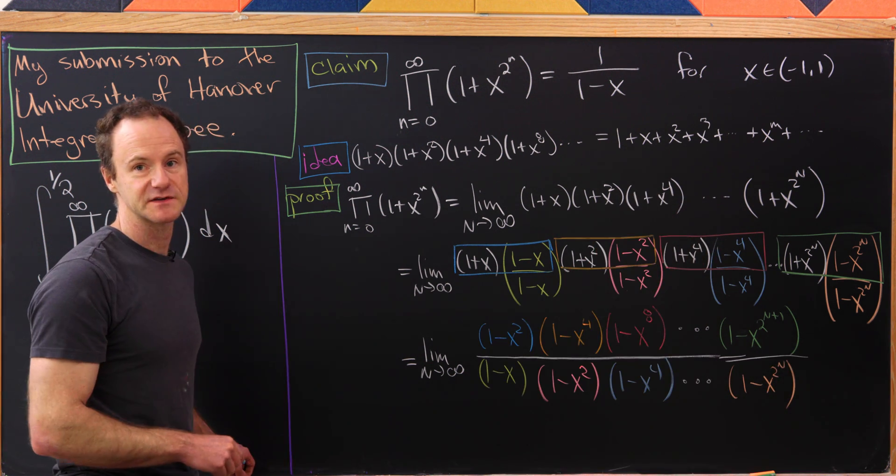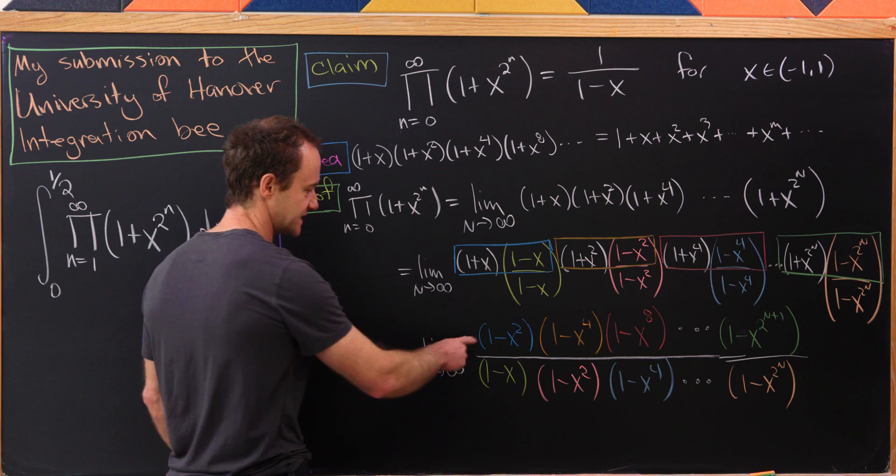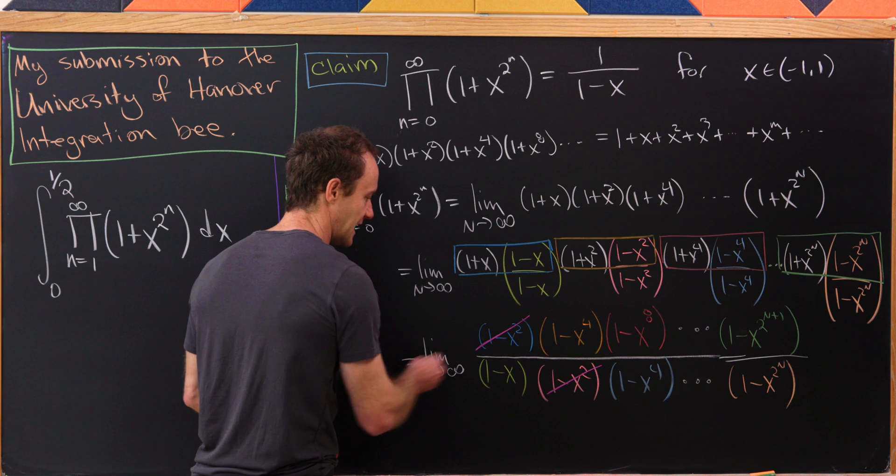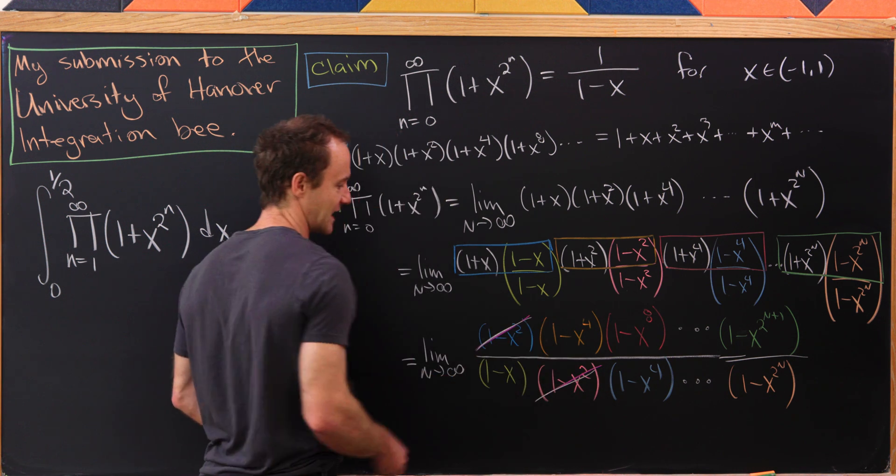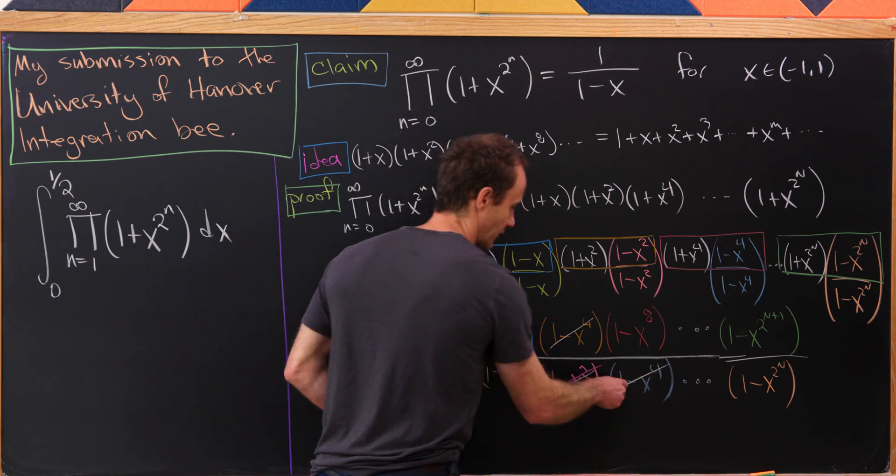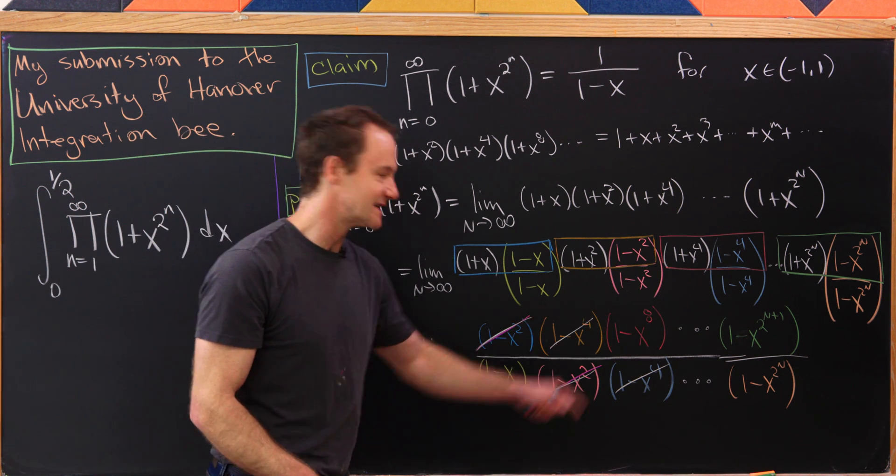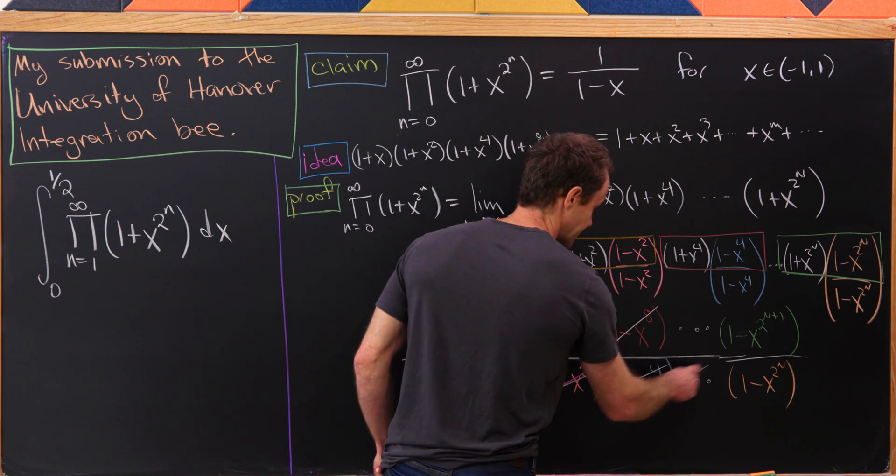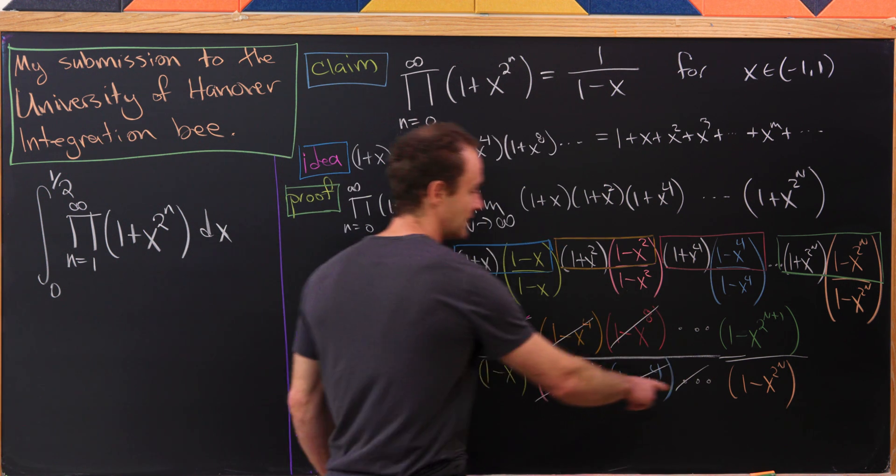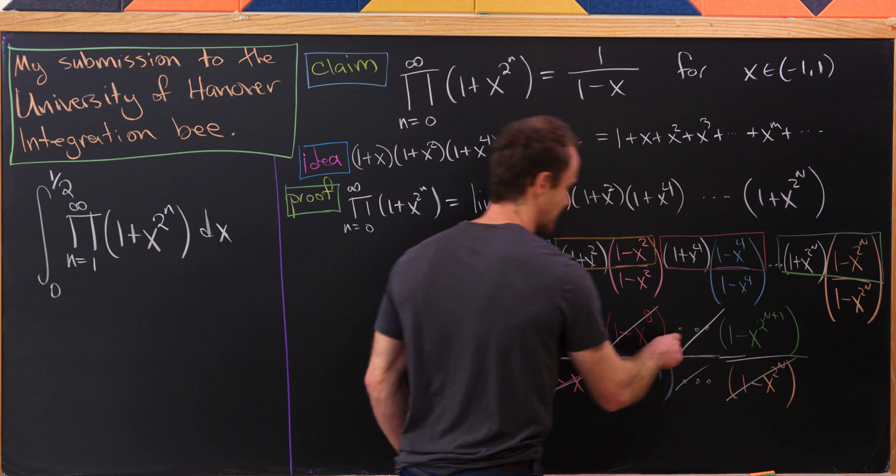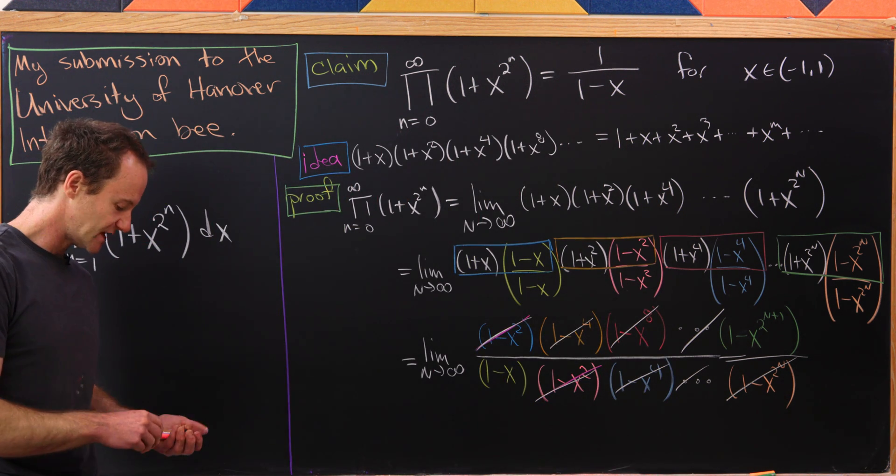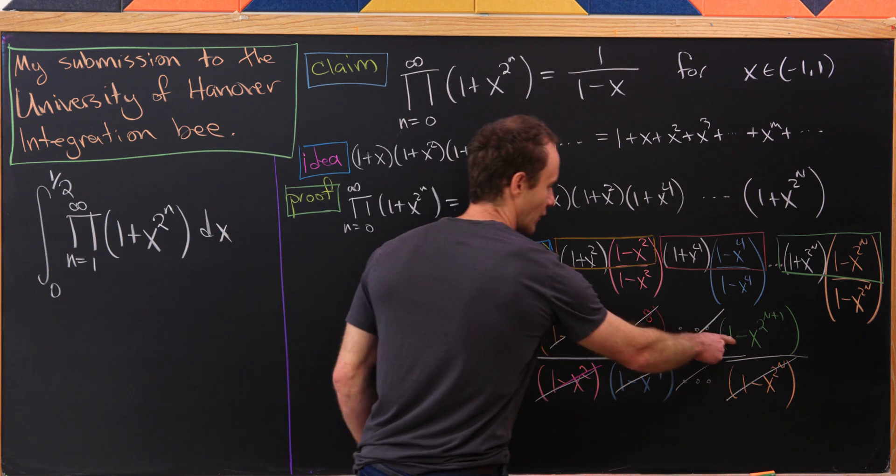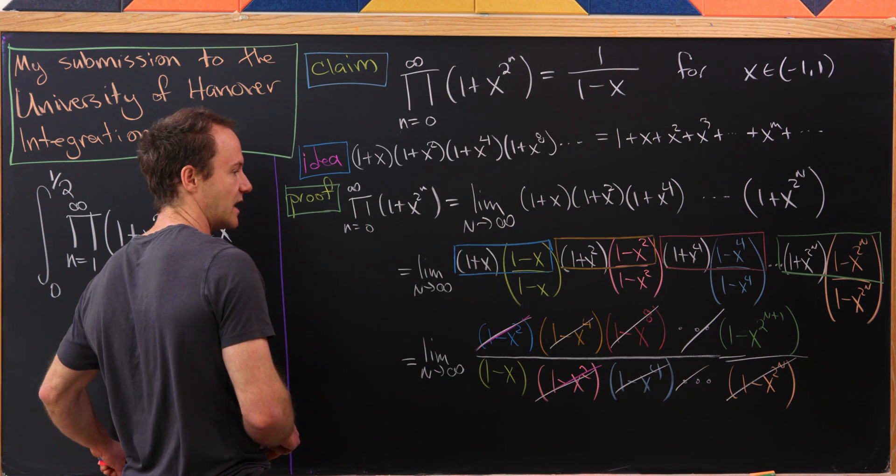Now we want to take care of some obvious cancellations. This 1 minus x squared will cancel with this 1 minus x squared, then this 1 minus x to the 4th will cancel with this 1 minus x to the 4th. This 1 minus x to the 8th will cancel with something that came right after it, and this 1 minus x to the 2 to the n will cancel with something that came right before it. We have a 1 minus x in the denominator and we have a 1 minus x to the 2 to the n plus 1 in the numerator.